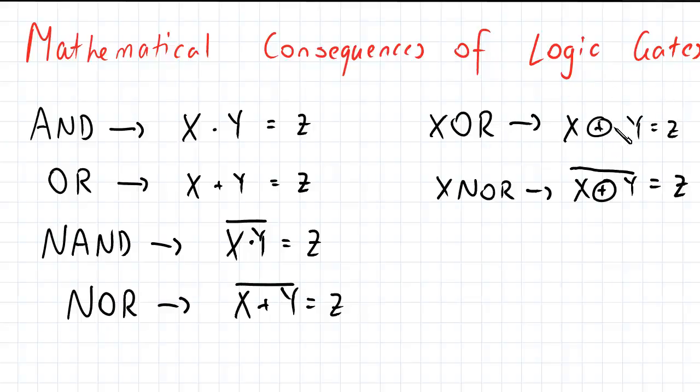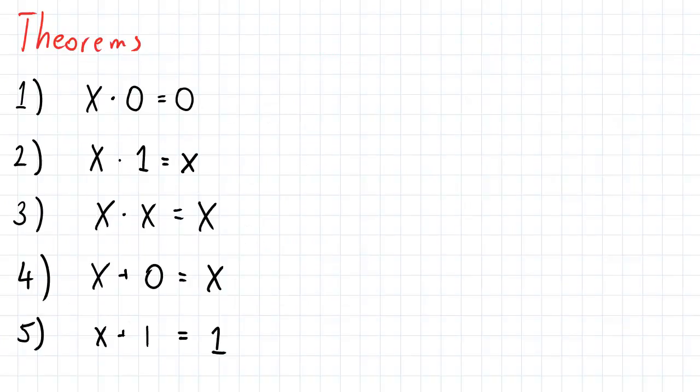And XOR now has this new symbol where it's just x plus y except we have a circle around the plus. And XNOR will just be the inverse of this, which is the x plus y with the circle and the bar at the top to denote the inverse. So now let's look at a few theorems, some very basic fundamental theorems.